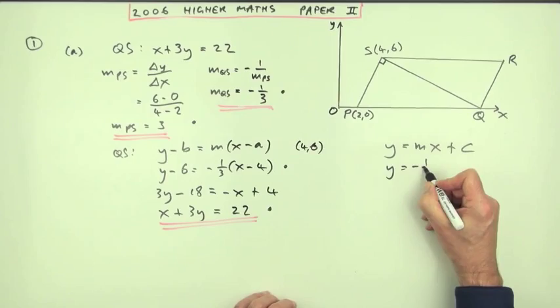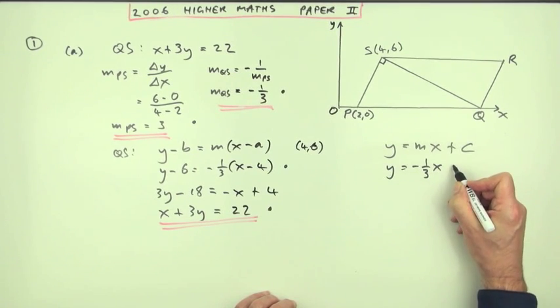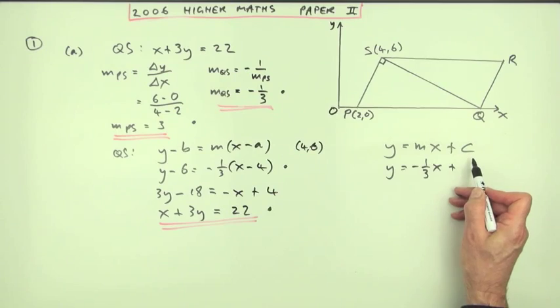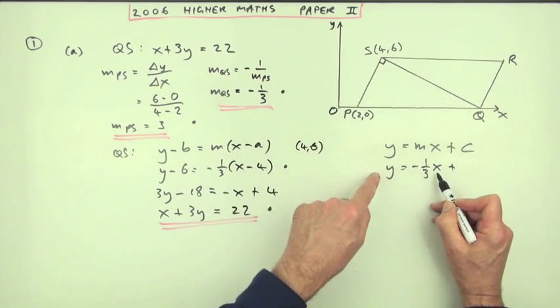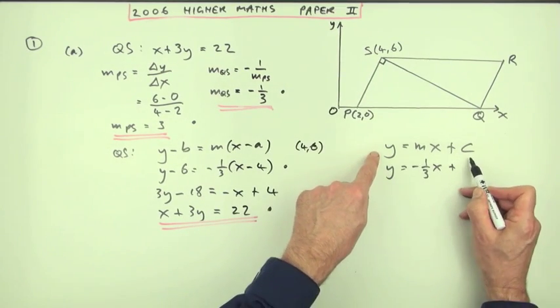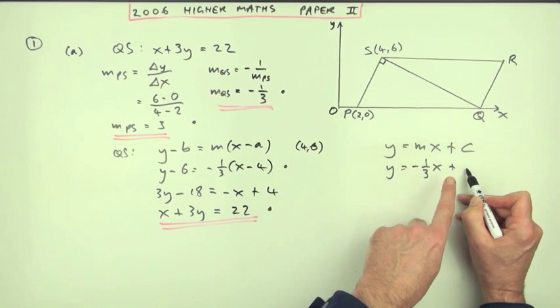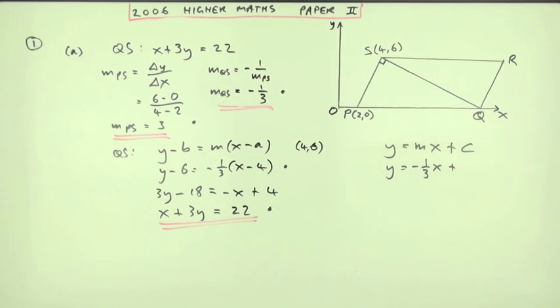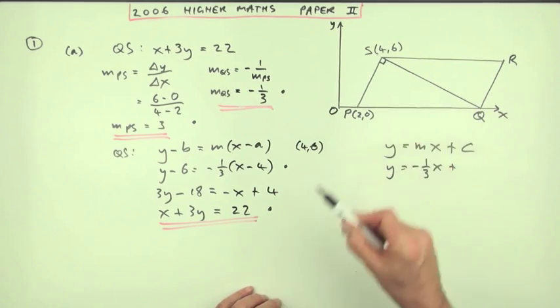You can still use that if you wish. I know the gradient already is negative 1 third. What's c? Where does it cut the y-axis? Well, I could find that out by substituting a point in. I've got an equation. There'd be three unknowns, y, x and c. And if I'm putting known values for two of them, I could find c. But you can also get c by using the gradient.